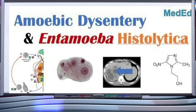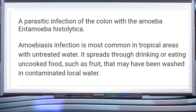The next disease we are going to discuss is amoebiasis. It is caused by an intestinal endoparasite called Entamoeba histolytica, which is found in the large intestine of human beings. Amoebiasis infection is most common in tropical areas with untreated water. It spreads through drinking or eating uncooked food, such as fruit that may have been washed in contaminated water.